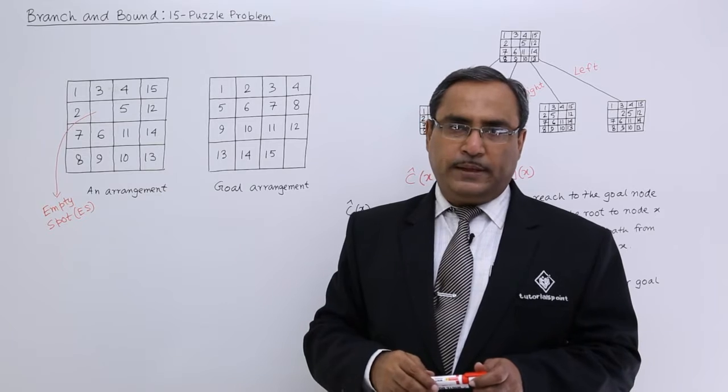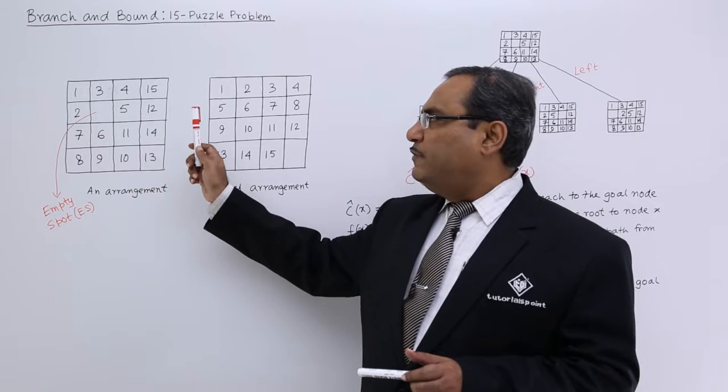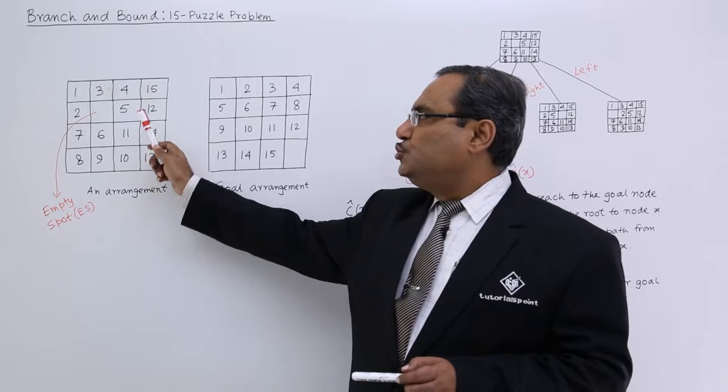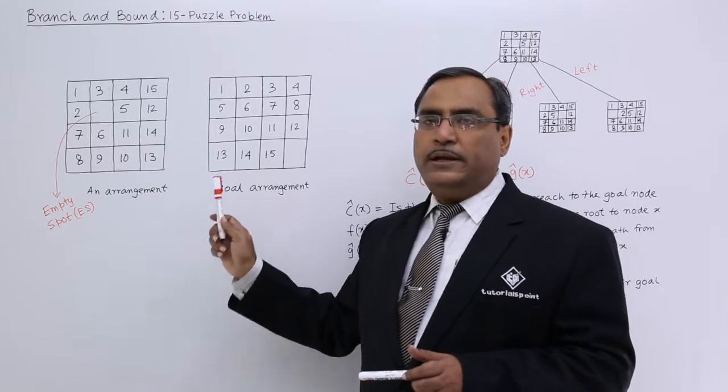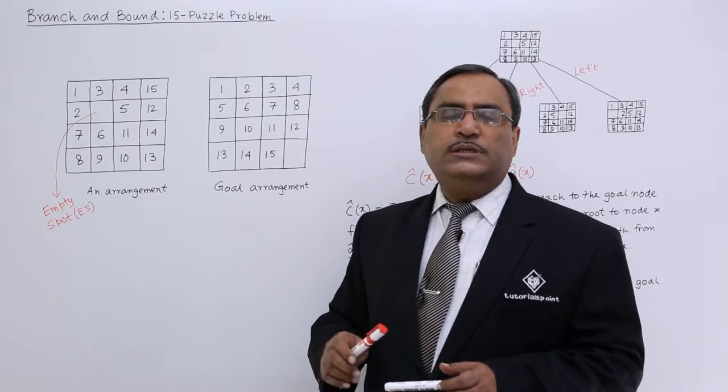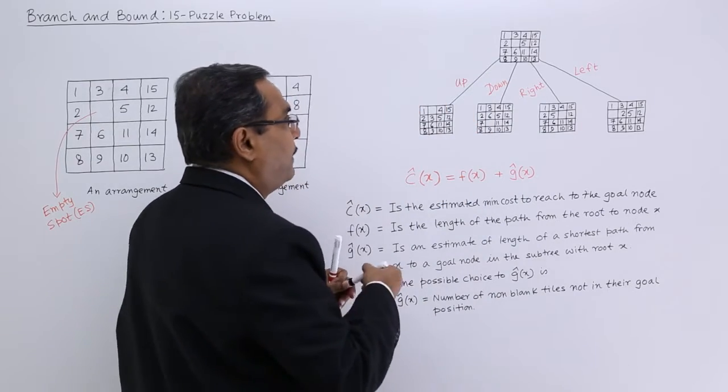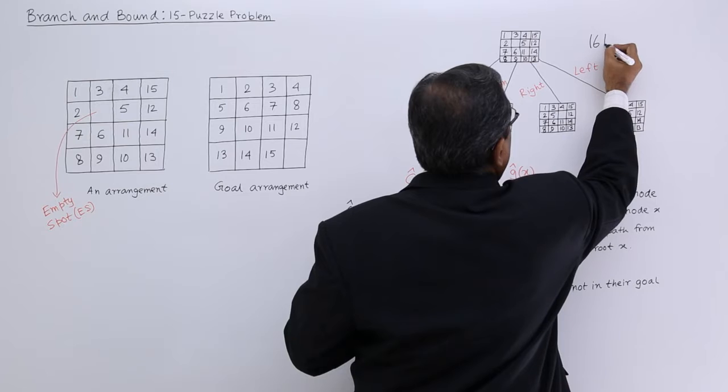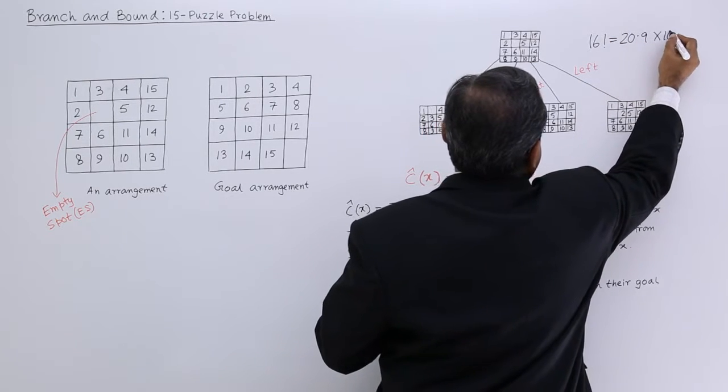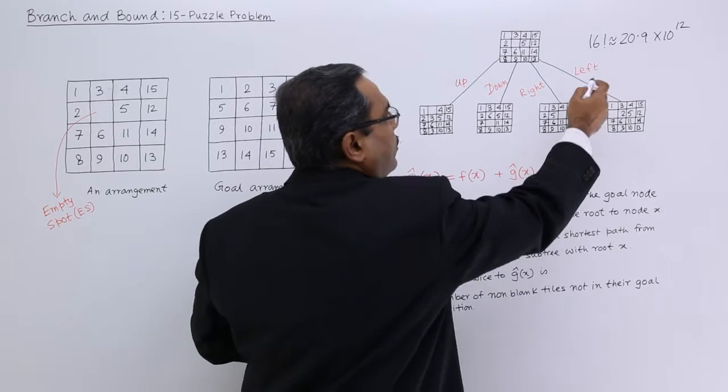This is the goal arrangement. From the starting state or starting arrangement, we are supposed to do the moves so that you can reach the goal arrangement in the shortest path. It is a permutation problem. Here we can have 16 factorial permutations, which is this number of arrangements that are possible.